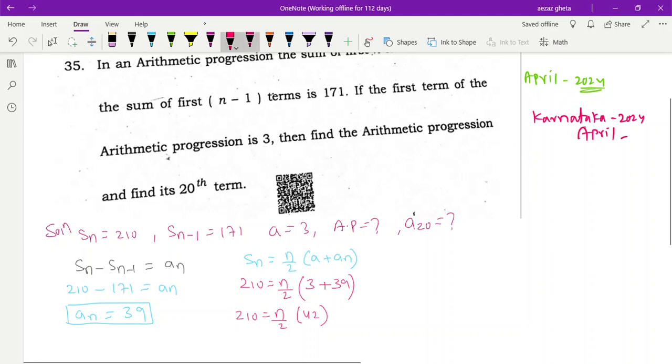210, n by 2, this is 42. So 2 ones are, 2 twos are, 2 ones are, we will get 210 is equal to n into 21. So this 21 will take here, n is equal to 210 divided by 21. 21 ones are 21 ones, are 0.